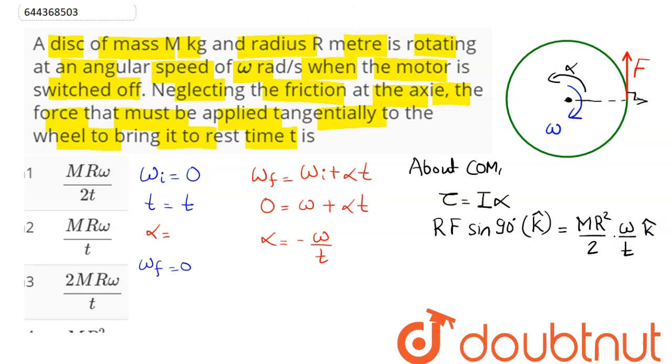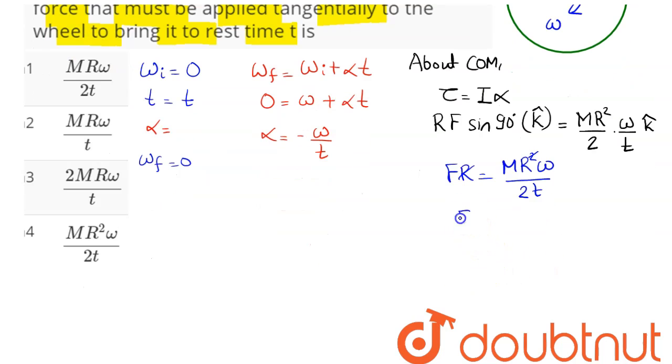We need to find the magnitude of force F. This comes as F times R equals MR² ω divided by 2t. R cancels out. Hence the tangential force value is MRω/2t. That is option number 1, the correct answer.